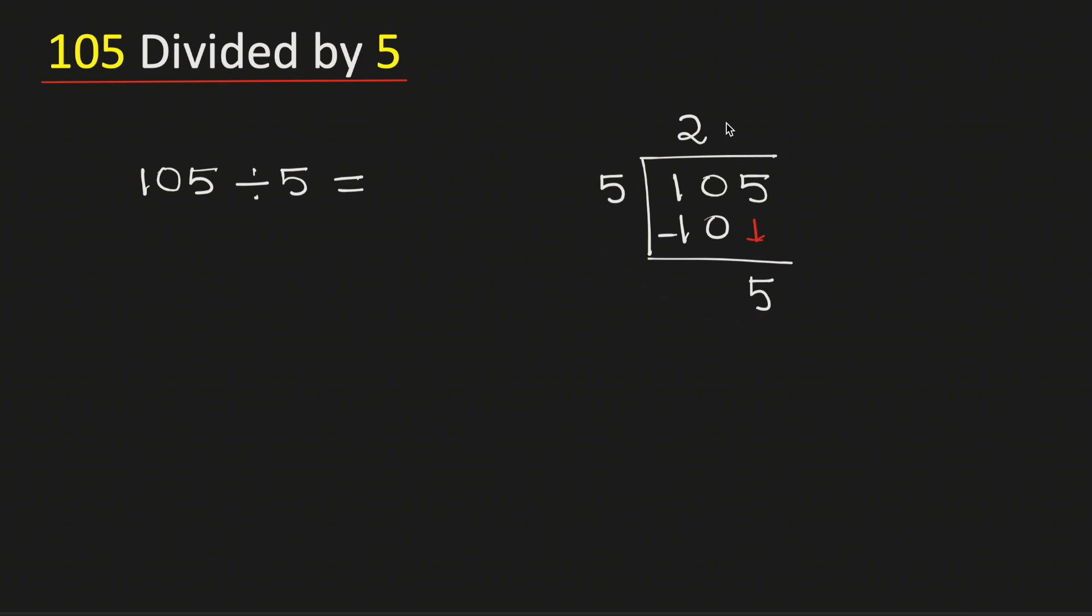Now we know that 5 times 1 is 5. Subtract, we get 0. As we have obtained the number 0 and there is no number to bring down here, so we will stop. Therefore, 105 divided by 5 is equal to 21.